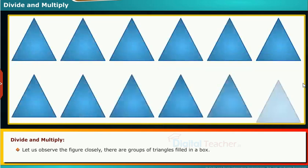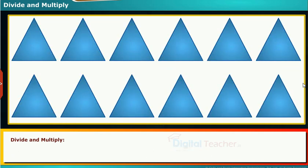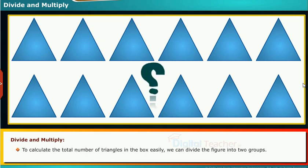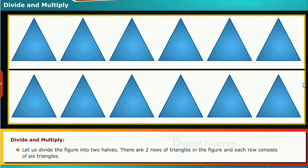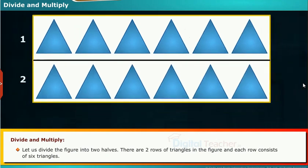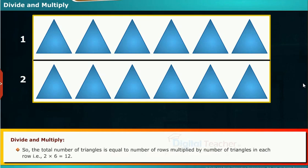Let us observe the figure closely. There are groups of triangles filled in a box. To calculate the total number of triangles in the box easily, we can divide the figure into 2 groups. Let us divide the figure into 2 halves. There are 2 rows of triangles in the figure and each row consists of 6 triangles. So the total number of triangles is equal to number of rows multiplied by number of triangles in each row, that is 2 into 6 equals 12.